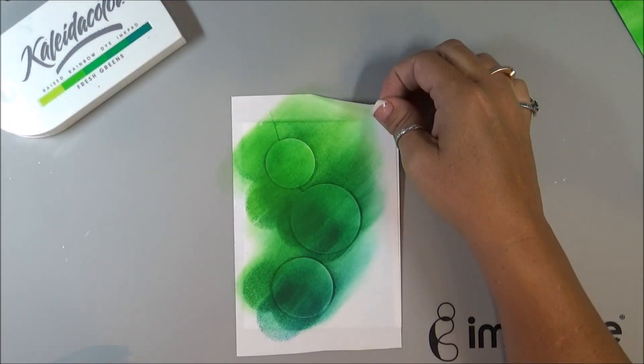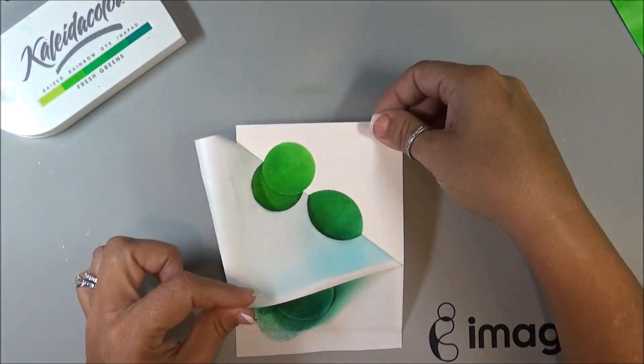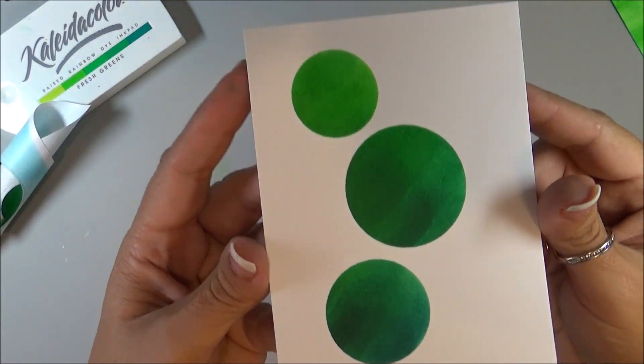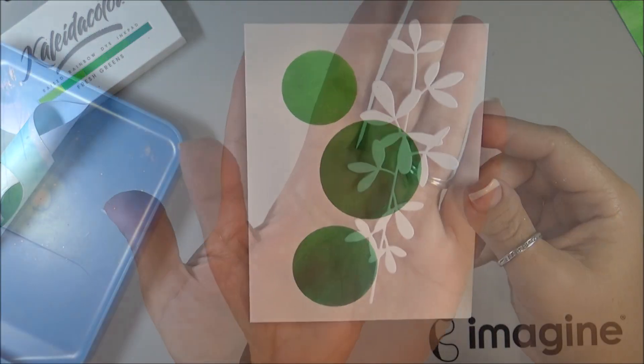Okay, so like that, and then the same, when I peel this off, I'll have the circles that look like that, where the color goes lighter to dark.